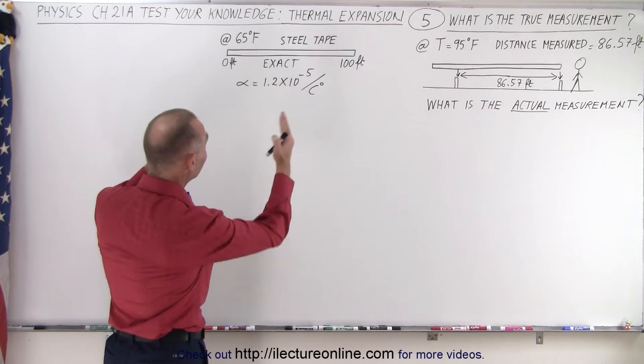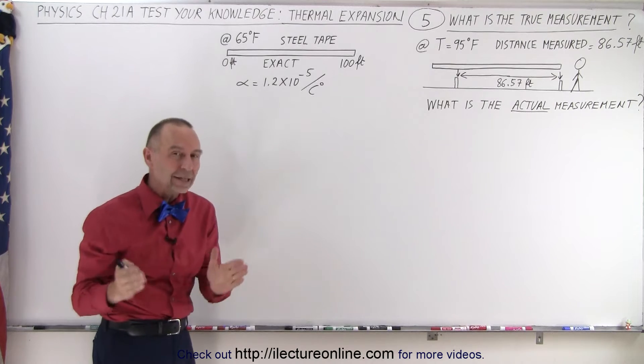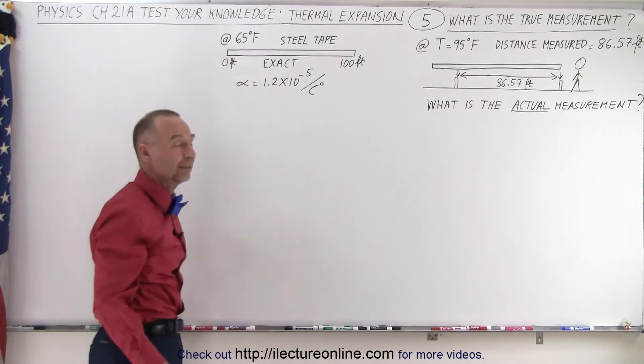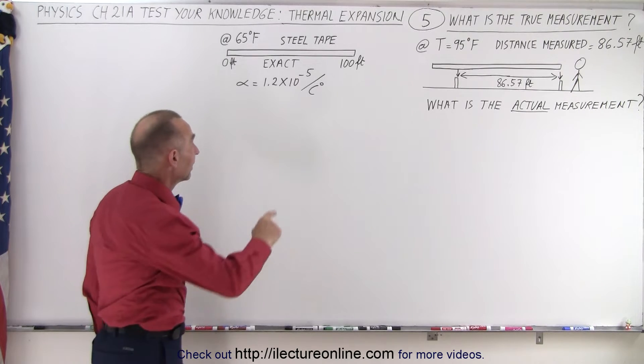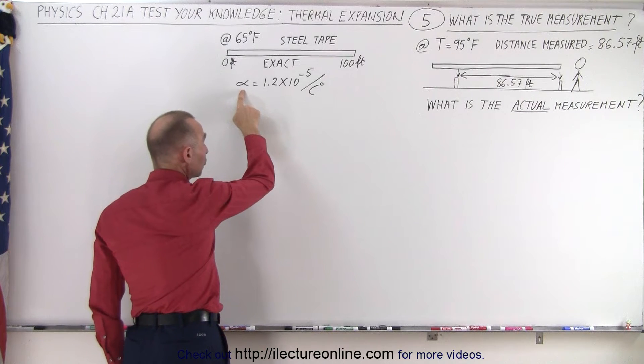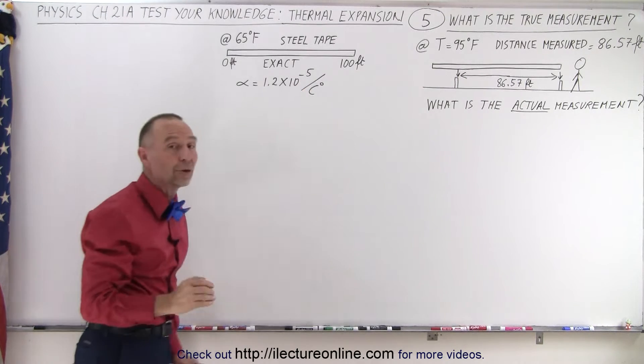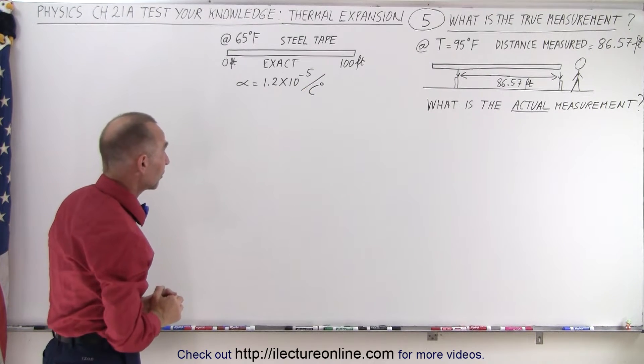So what we have here is a steel tape that's exactly 100 feet long when the temperature is 65 degrees Fahrenheit. The coefficient of linear expansion is 1.2 times 10 to the minus 5 per centigrade degree, so we'll have to convert from Fahrenheit degrees to centigrade degrees.